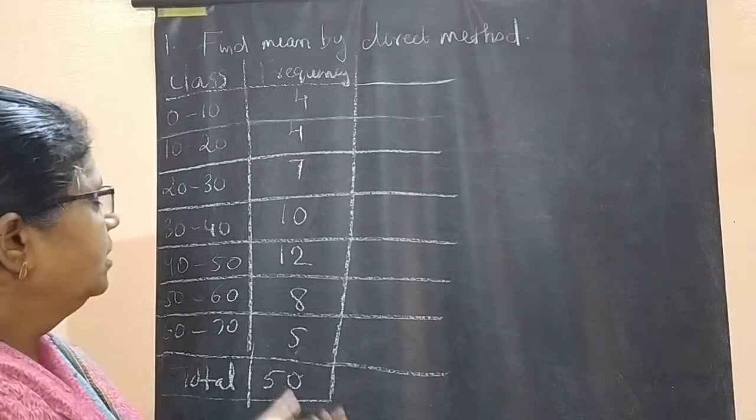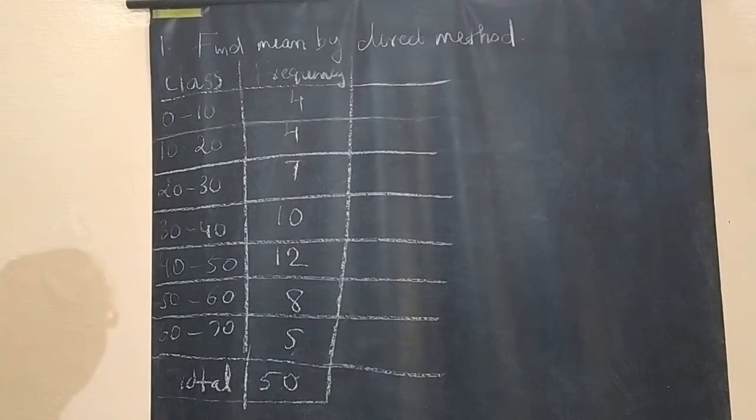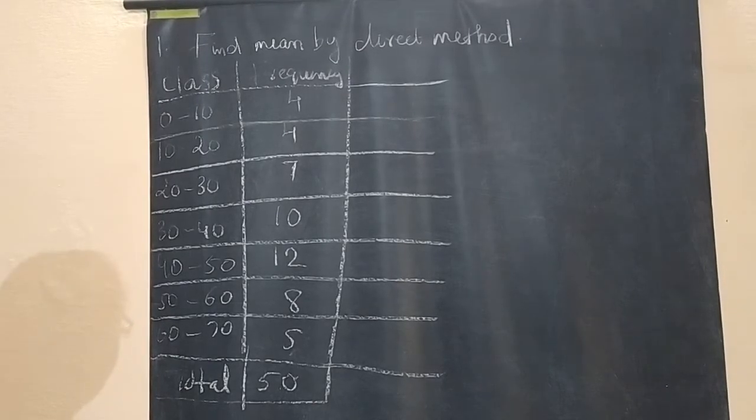Here you are getting a grouped data. First column is class 0 to 10, 10 to 20, 20 to 30, etc.